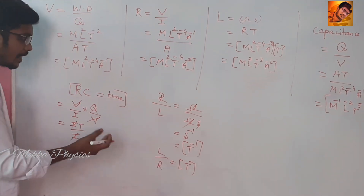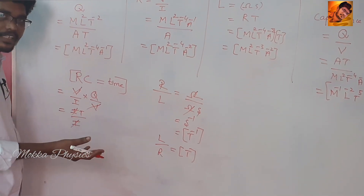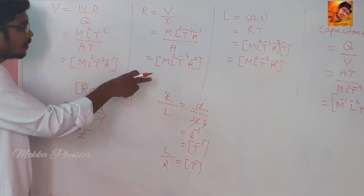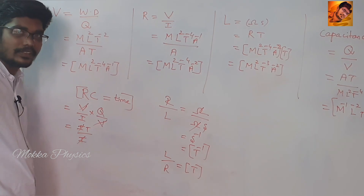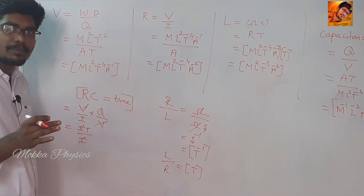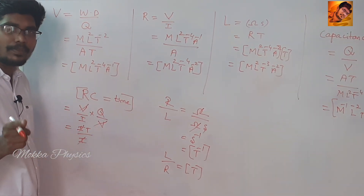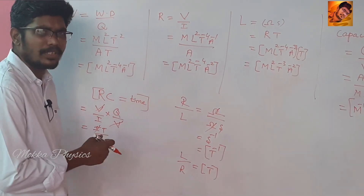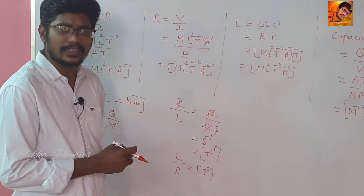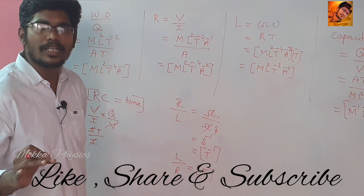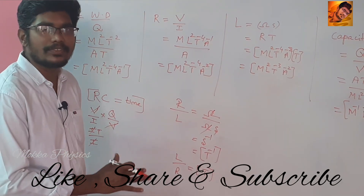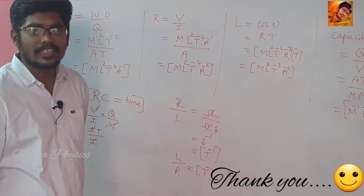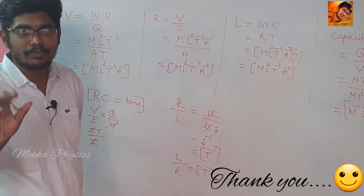For combinations, you have to know all four basic electrical quantities and their dimensions. If you know these dimensions, you can crack the problem in a neat way. These are very important dimensions. I hope you would have understood. Thank you very much. See you in my next video.